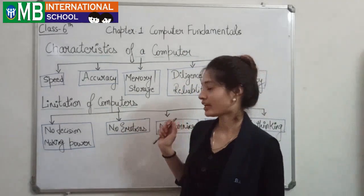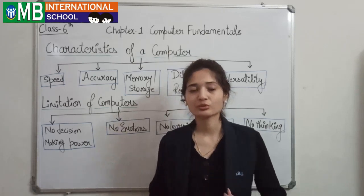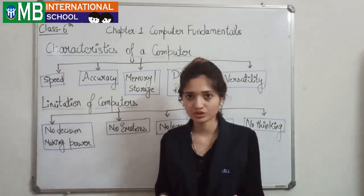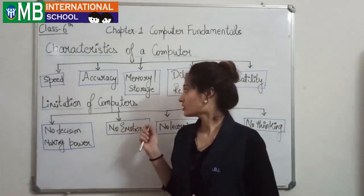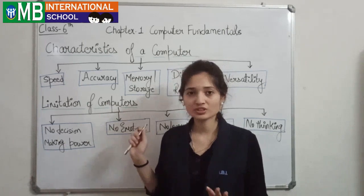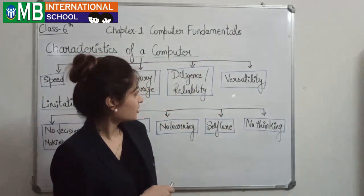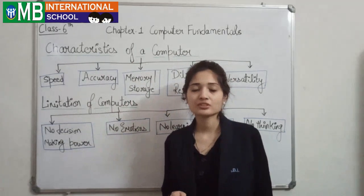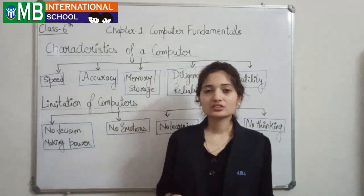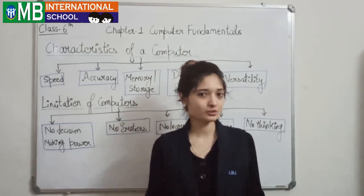Now, reliability. Reliability means a computer can work for a long time. Like human beings — we work for 2-3 hours continuously and then we need rest. But a computer has no need to rest; it can work 8 hours a day continuously. And last, versatility. Versatility means a computer can work simultaneously with the same speed and same accuracy — for example, we can listen to music while working in WordPad or Notepad at the same time.